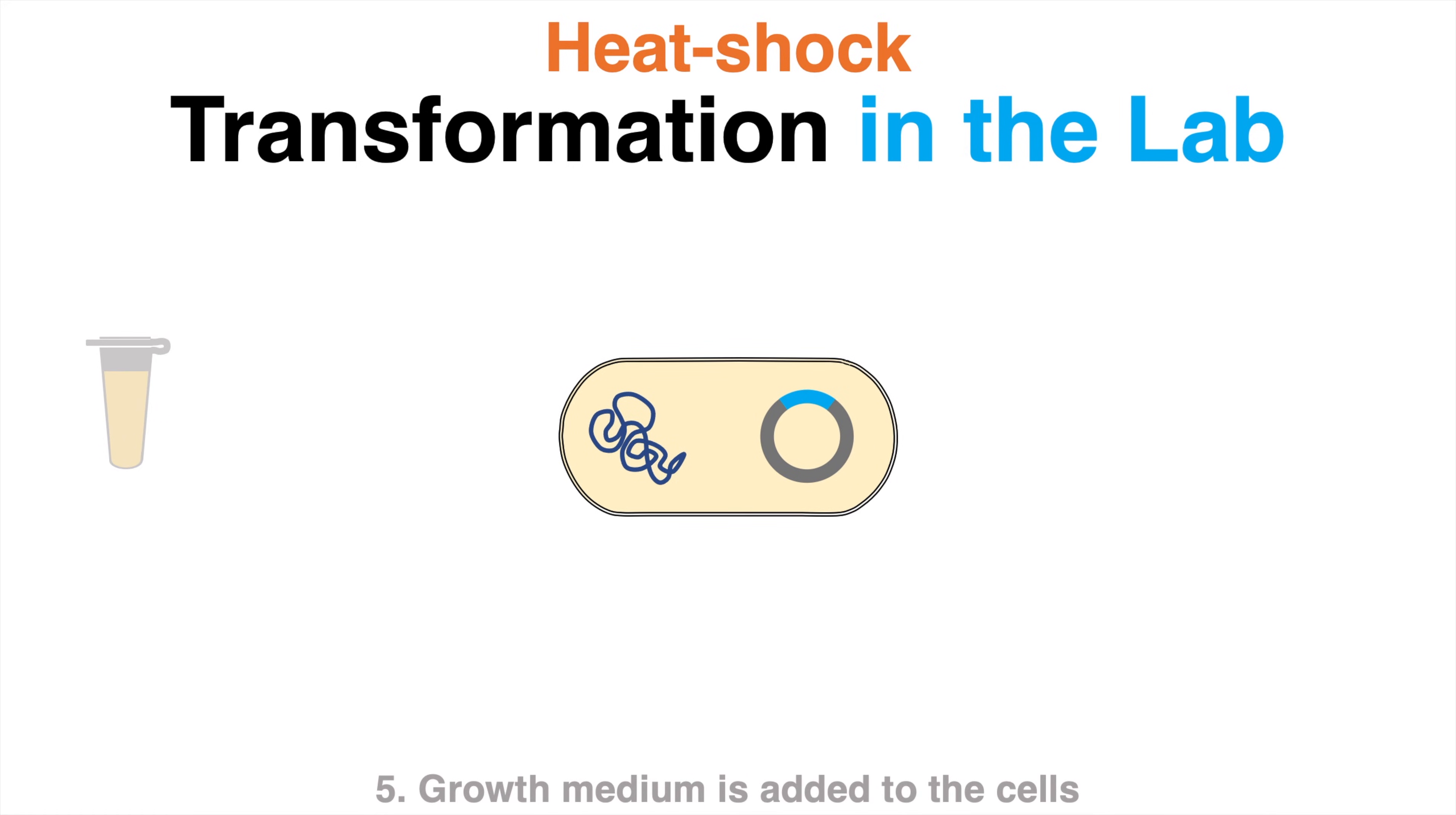Growth medium is added to the cells and they are incubated with agitation at 37 degrees to regenerate the damaged cell membrane.